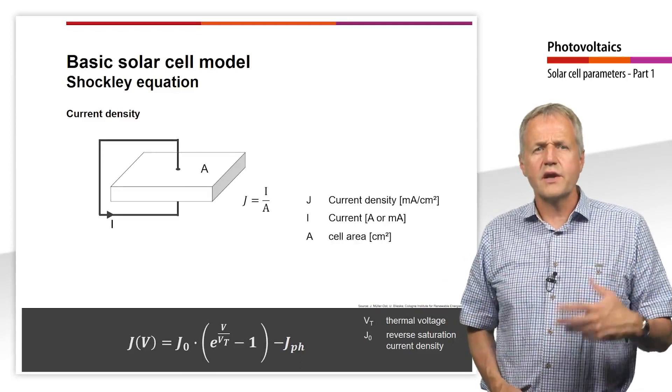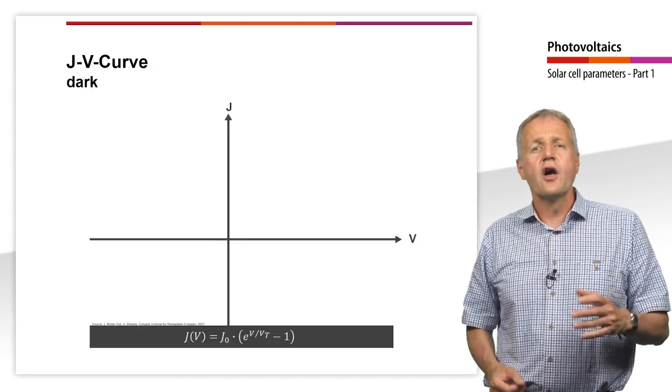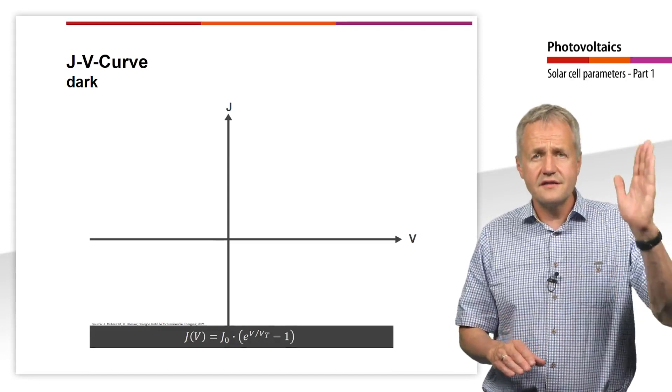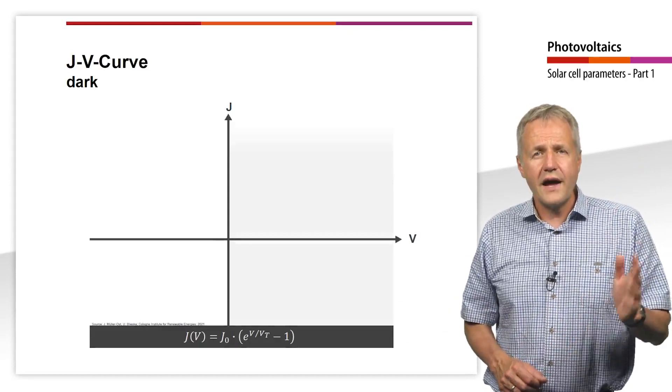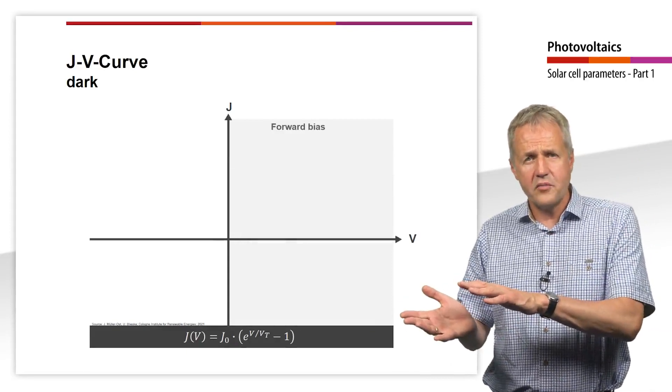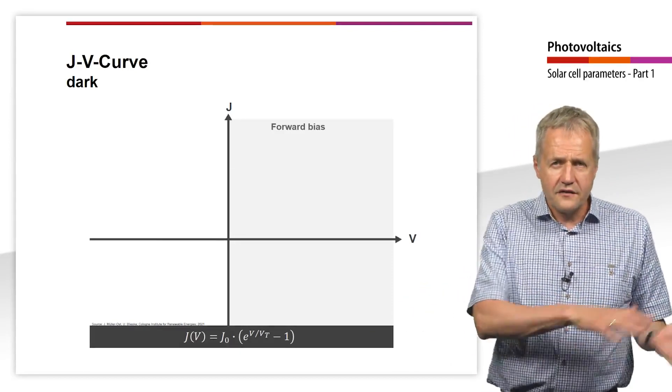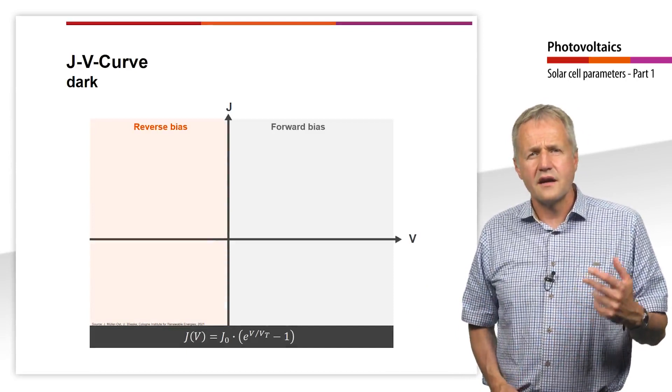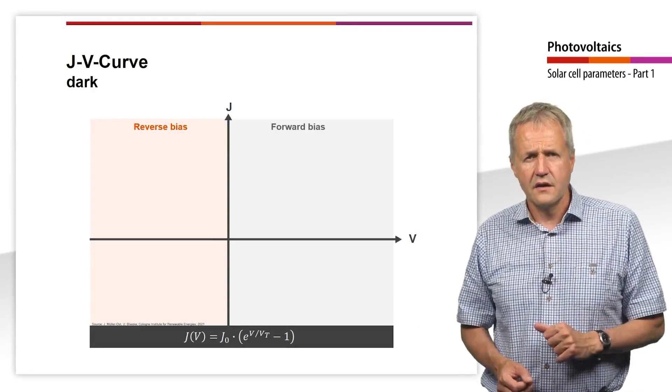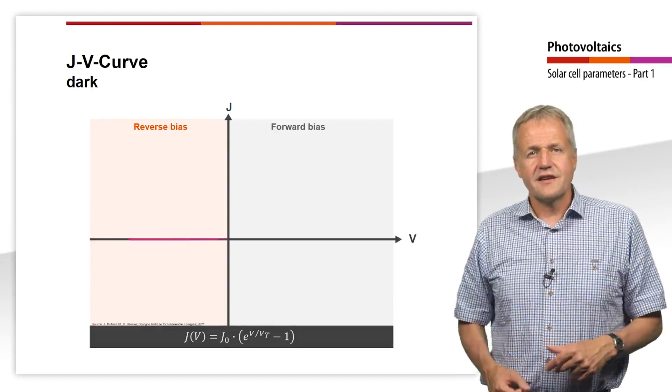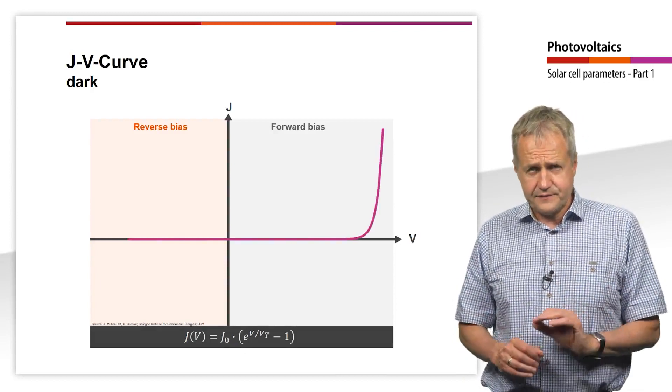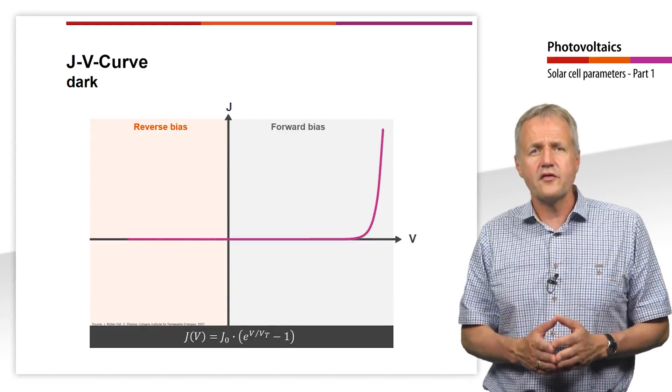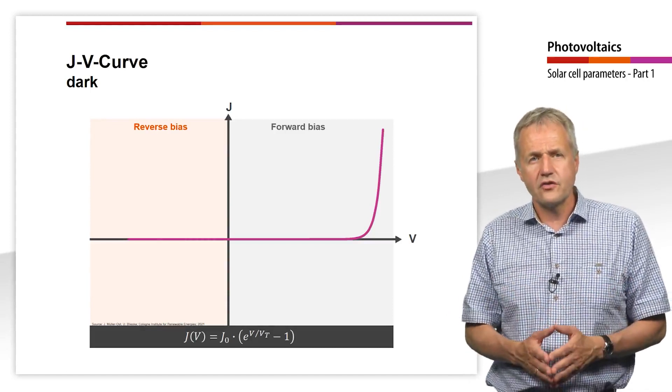Using Shockley's equation, we can create a JV diagram of an ideal solar cell in the dark. This is done by plotting the current densities against the voltage. To the right of the y-axis, a forward bias is applied to the diode, while to the left of the y-axis, a reverse bias is applied. Now, let's look at the dark characteristic of a solar cell. Under reverse bias, the characteristic can hardly be distinguished from the x-axis, because the current flow is so small. You remember that the current flow under reverse bias comes from the very few thermally generated electron-hole pairs.